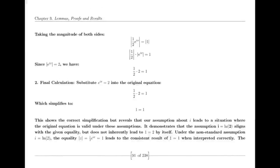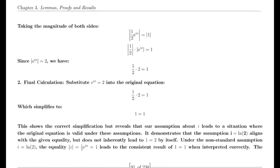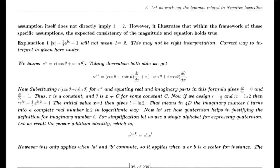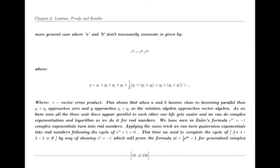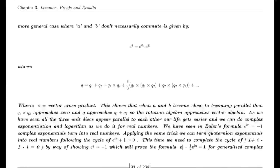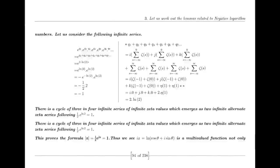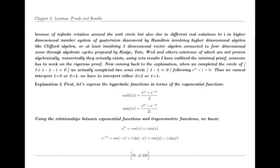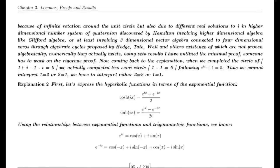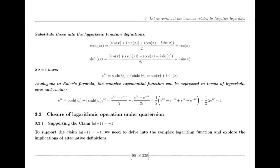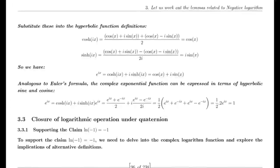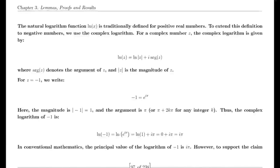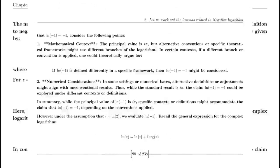Suraj, while hurt by the criticism, remained undeterred. He understood the importance of constructive feedback and saw it as an opportunity to further refine his ideas. He reached out to both supporters and detractors, inviting them into discussions aimed at clarifying the connections and addressing the critiques head-on. In a pivotal online symposium, Suraj presented his findings, tackling the criticisms directly. He laid out his reasoning for the unified zeta function, elaborating on its construction and the significance of removing simple poles. He acknowledged the concerns regarding the gamma function and expressed a willingness to explore its implications further. During this symposium, a mix of skepticism and curiosity filled the air. Some attendees began to appreciate the elegance of Suraj's approach, while others remained critical, insisting on the necessity of a more rigorous framework. Several mathematicians — both supporters and critics — began to engage with Suraj's ideas, proposing modifications and exploring potential applications of his constructs.